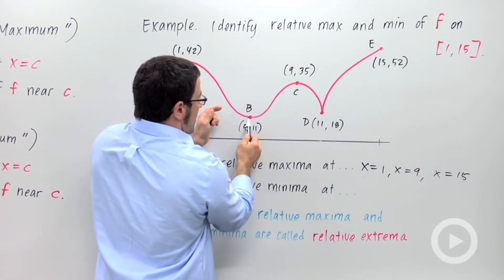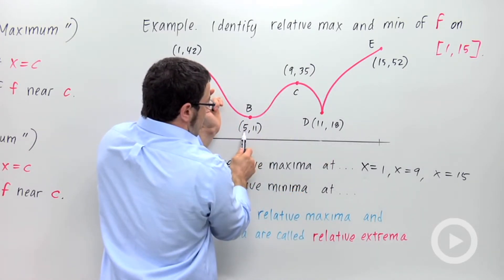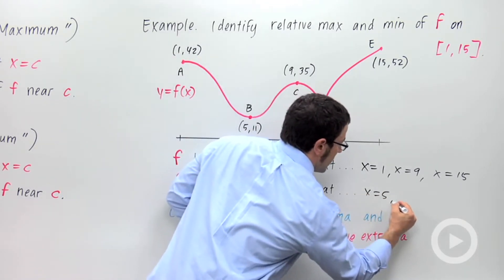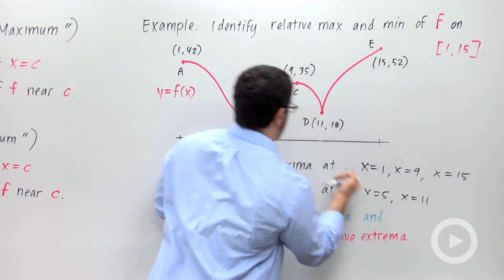And here, we have a minimum value of 11, and that minimum occurs at x equals 5. So there are relative minima at x equals 5 and x equals 11, these two points.